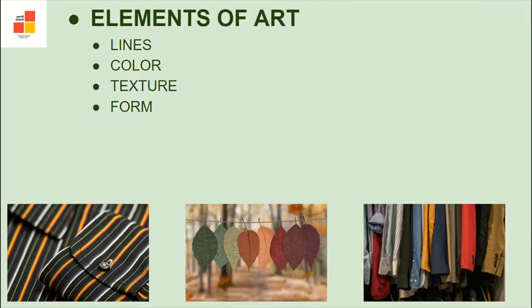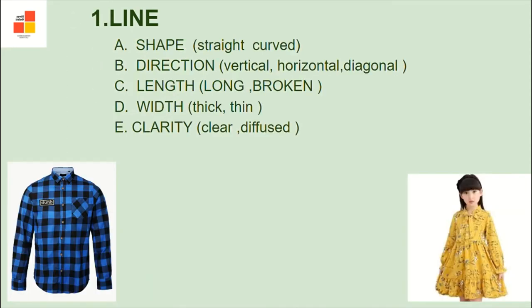Next, we talk about elements of art: line, color, texture, and form. We are going to study one by one. First of all, line. What do we mean by line? It is a distance between two dots.